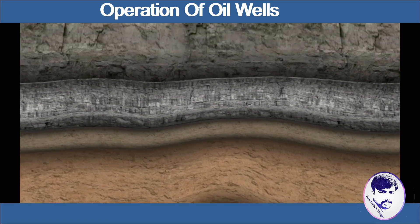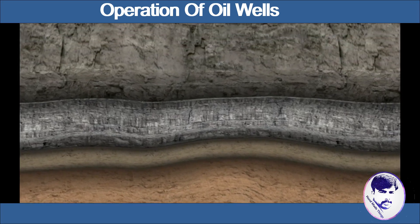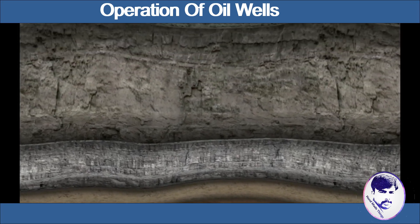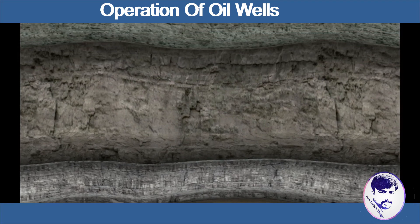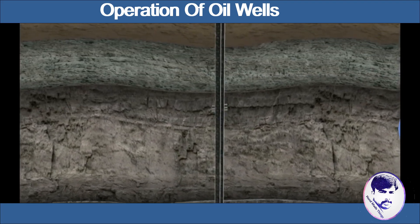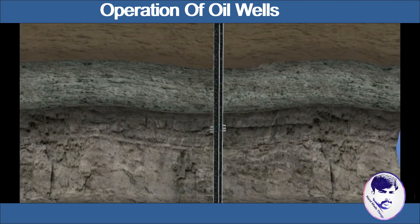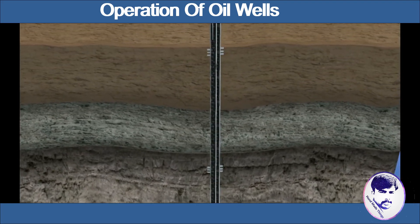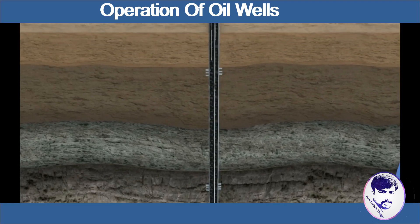The density of crude oil and natural gas is less than that of water. Therefore, water is found at the bottom of the trap, crude oil in the middle, and natural gas at the top.